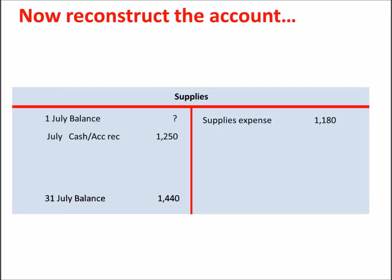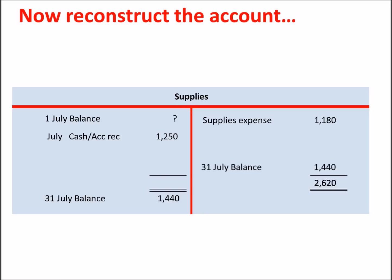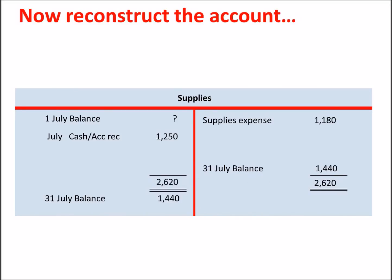We now have all of the information entered, so it's just a matter of balancing the account in the reverse order to what you normally would. Normally, you would add up the debit side and work out the balancing figure on the credit side and bring that down to the debit side. This time we will transfer the balancing figure to the credit side. We'll add down the credit side, transfer that figure to the debit side, then we can calculate the missing amount. $2,620 less $1,250 equals $1,370.